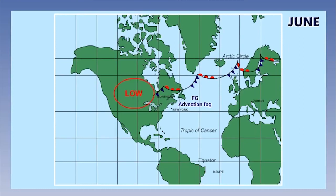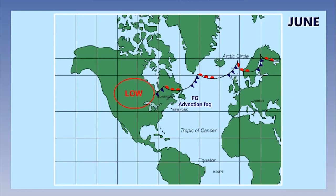Still in June, Central America warms significantly and has a lower pressure than in winter. This is called the North America or Canadian low. Within this area, expect convective cloud and thunderstorm activity from trailing cold fronts.